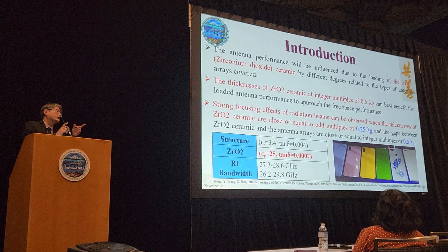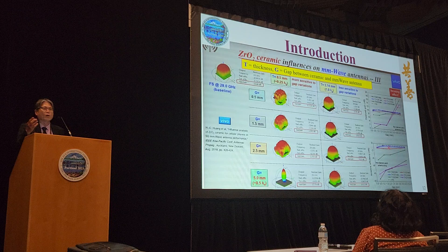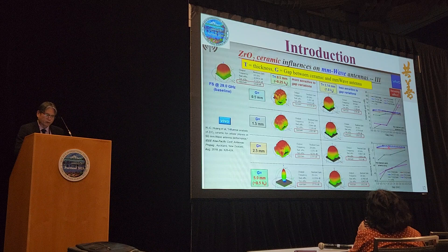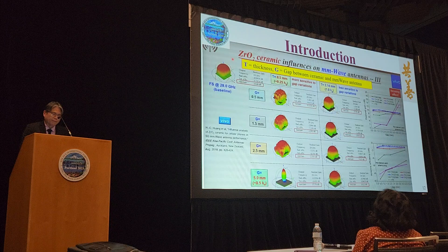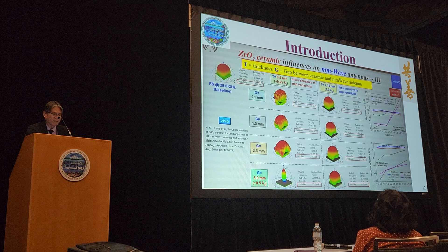He showed a picture with the 2x2 antenna in free space at the top left, showing a really nice broadside pattern. When he places a ZrO2 ceramic on top — where T is the thickness of the ceramic and G is the gap between the ceramic and the antenna — when the thickness is approximately 0.5 mm, very close to 0.25 lambda g, it is more sensitive to gap variation.